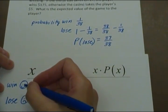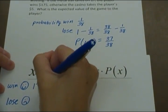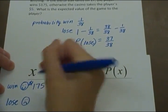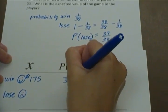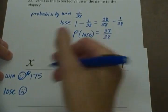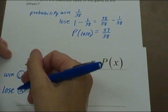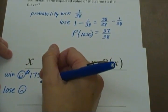So if we win, we're going to win $175. The probability that we win is 1 out of 38. If we lose, we're going to lose $5.